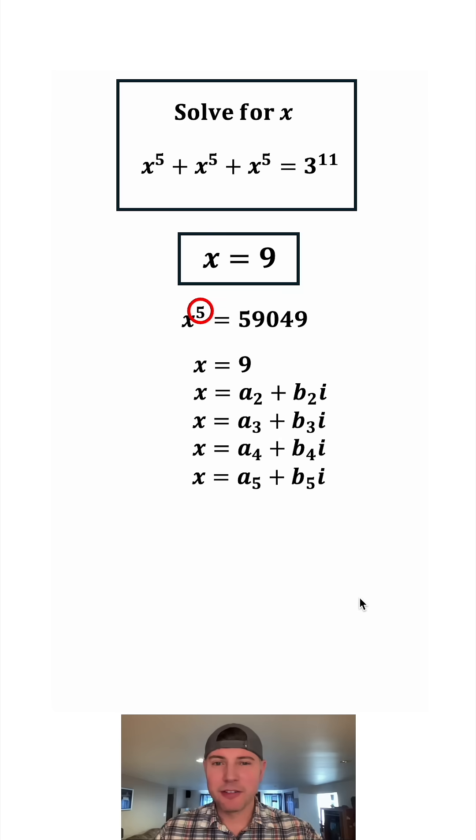But how do we find these other values? You can use de Moivre's theorem which uses polar numbers and that's kind of fun. We could do that in a different video. But for this video I'll show you a way to find them.